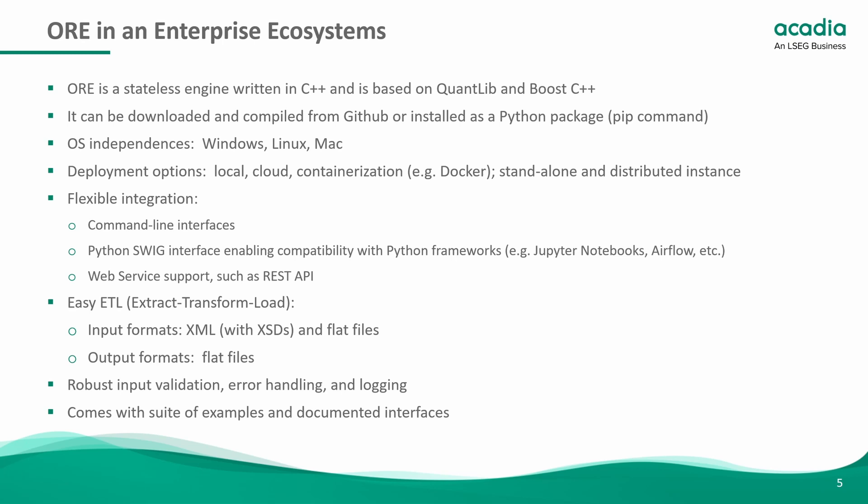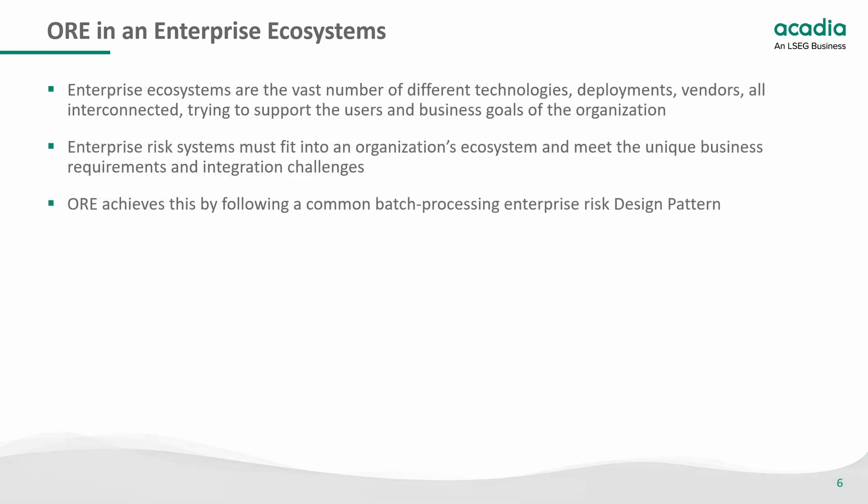Here are some qualities that allow ORE to work in an enterprise ecosystem. ORE is a stateless engine written in C++. It can be downloaded or compiled, is OS independent, has multiple deployment options — local or in the cloud — and can be containerized. It has flexible integration through command line interface, Python interfaces, and web service support such as REST APIs. It's easy to integrate with through XML and flat file formats, all of which have well-defined schemas. It has robust input validation, error handling, and logging, and comes with a suite of examples that allows for rapid development.